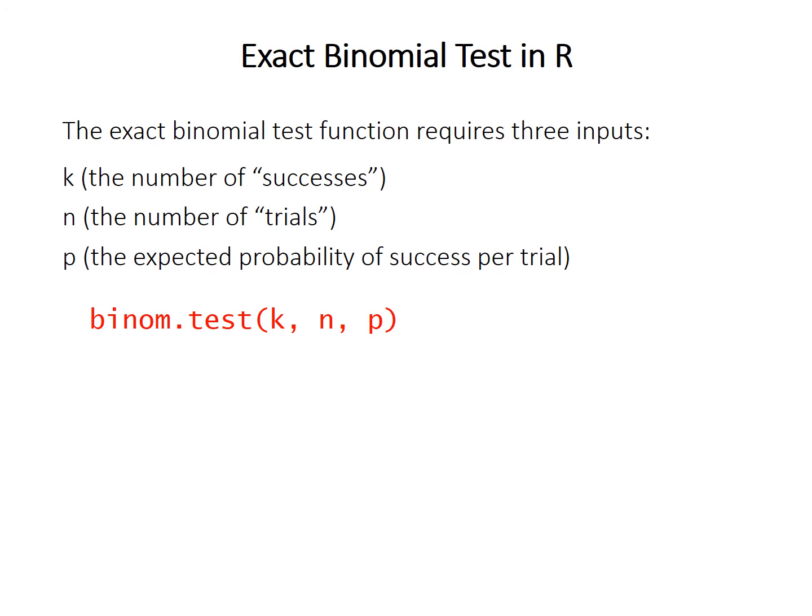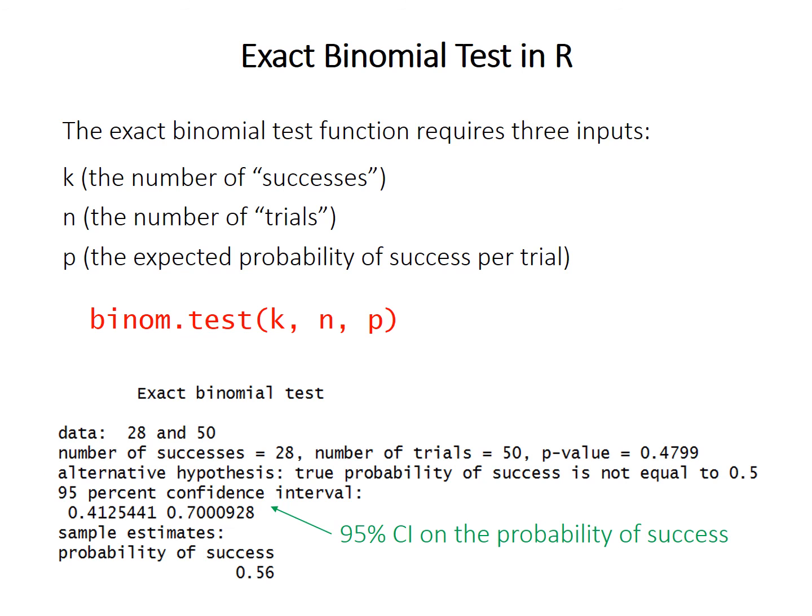The function binom.test in R for the exact binomial test requires three inputs: the number of successes in one category, the total number of trials (items in both categories combined), and the expected probability of success — a number between zero and one. The output summarizes the data and gives the p-value, the alternative hypothesis, the observed sample probability of success, and the 95% confidence interval on that probability. For our purposes, we mainly focus on the p-value.